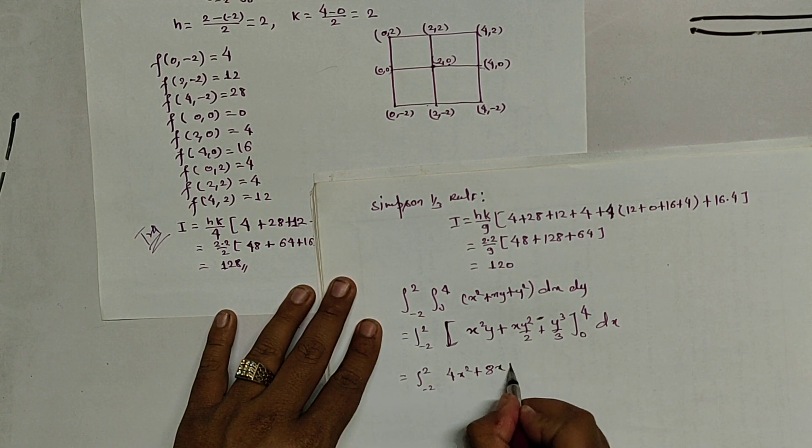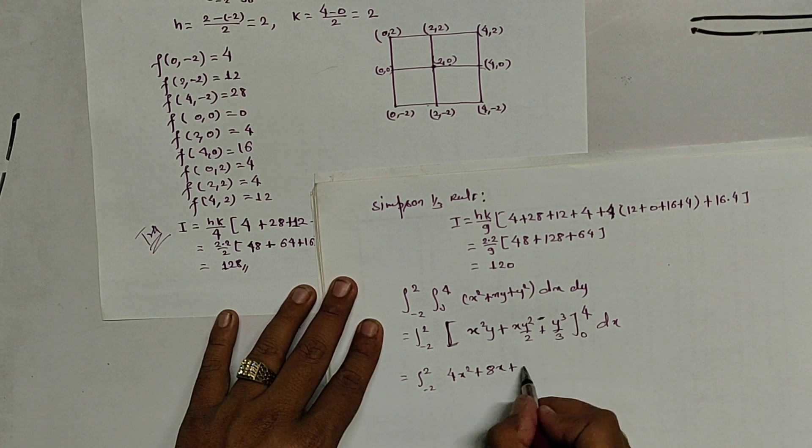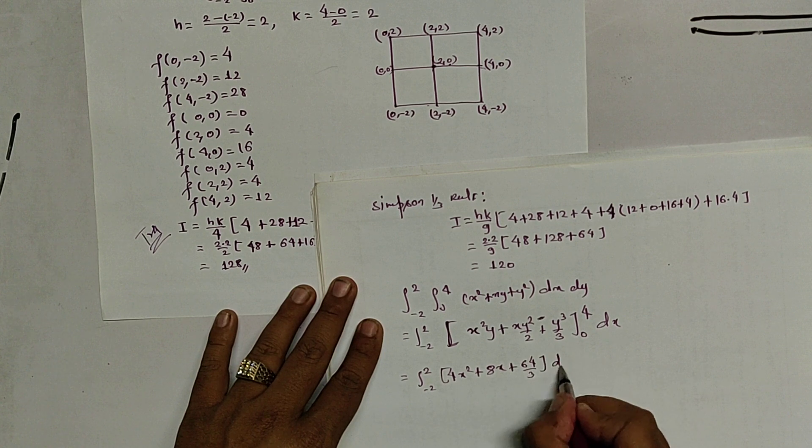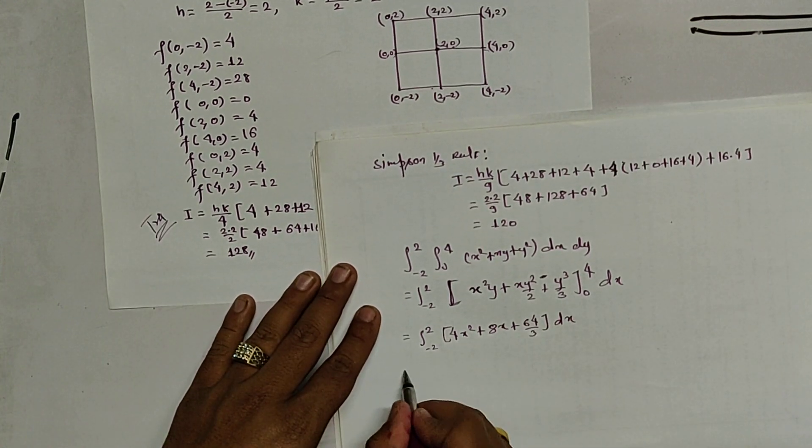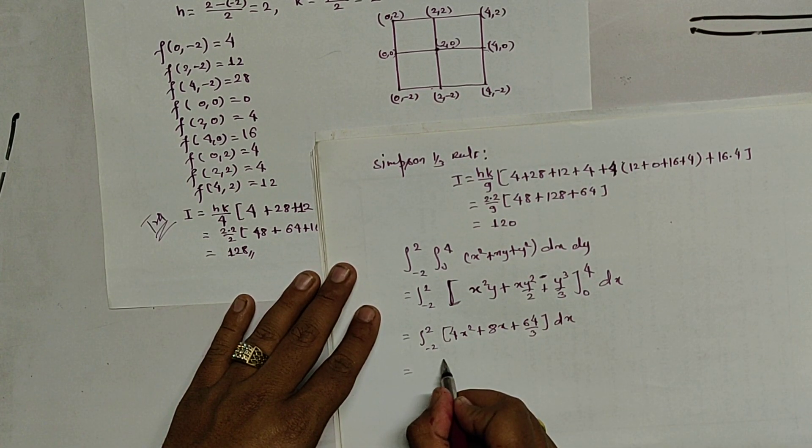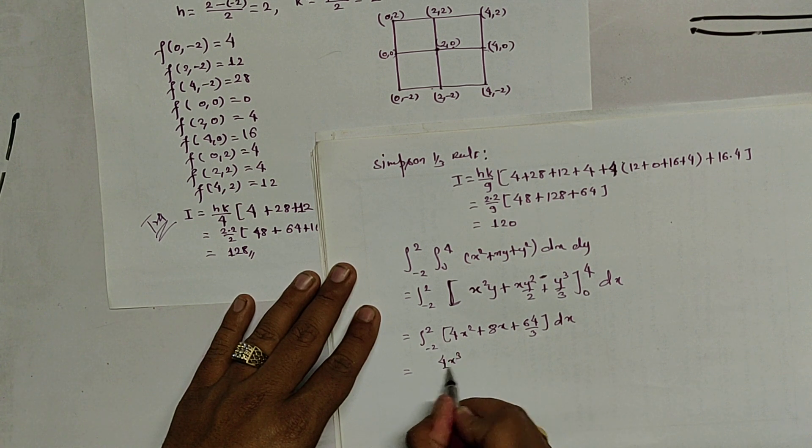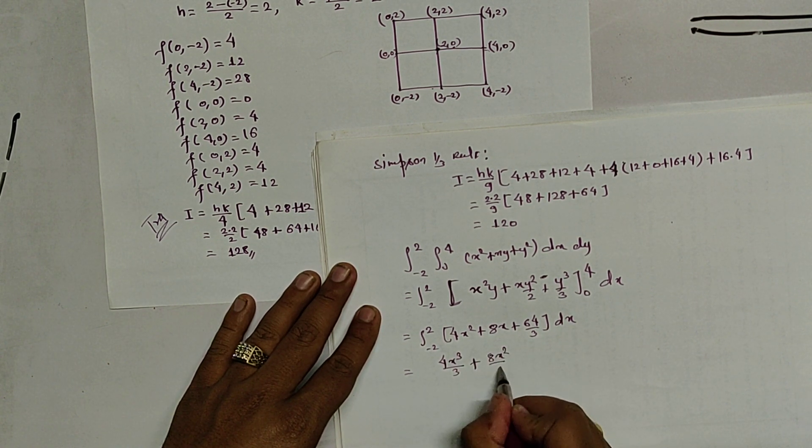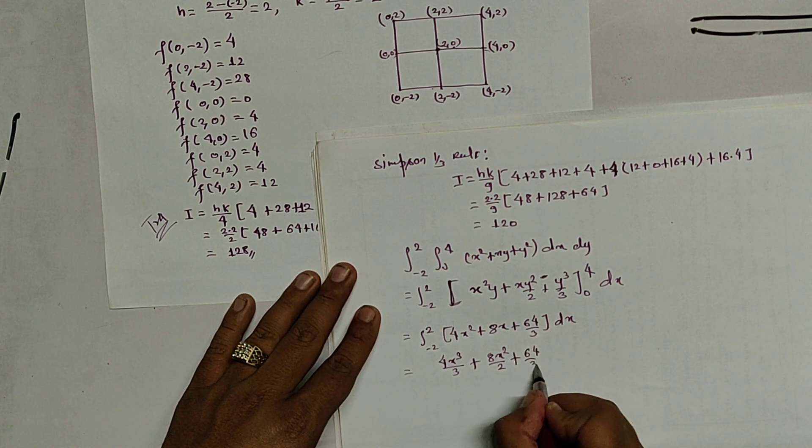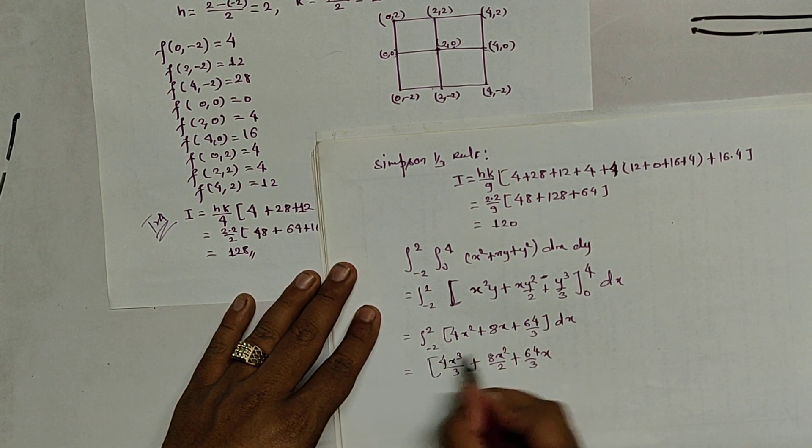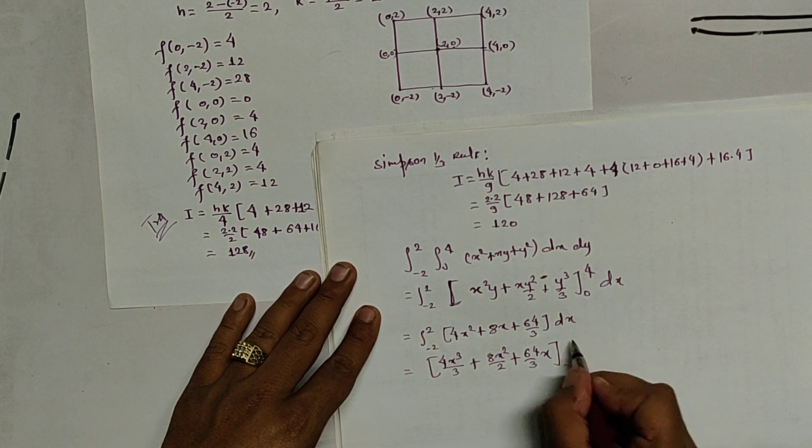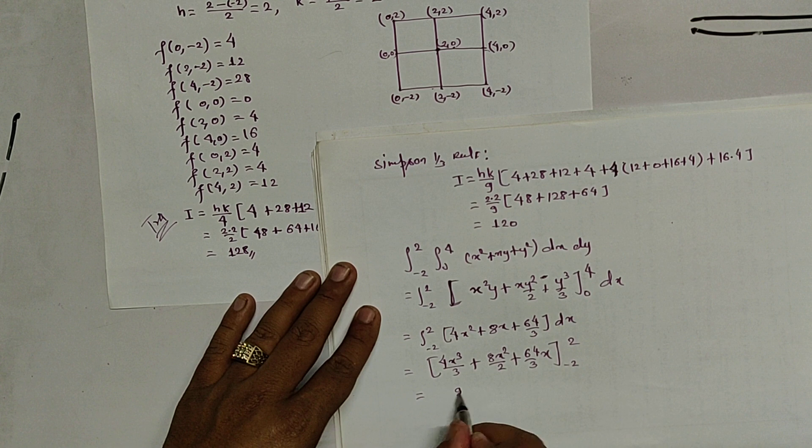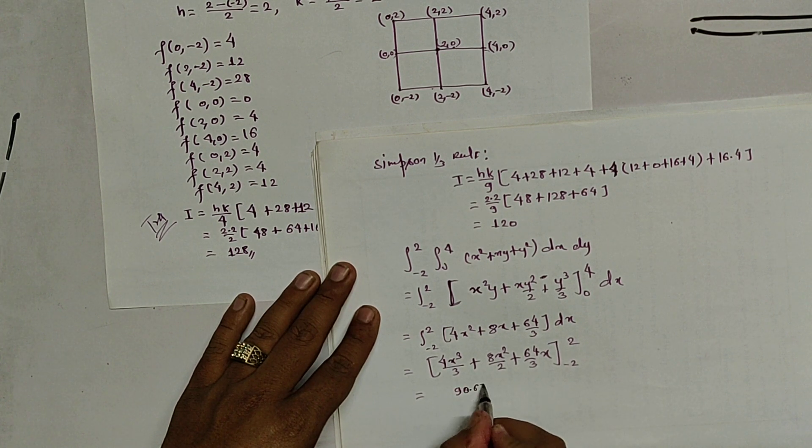So, it becomes 4 x square plus 8 x plus 64 by 3 dx. Again it becomes 4 x cube by 3 plus 8 x square by 2 plus 64 by 3 x and it is minus 2 to 2. So, when we substitute it, its value is 90.67.